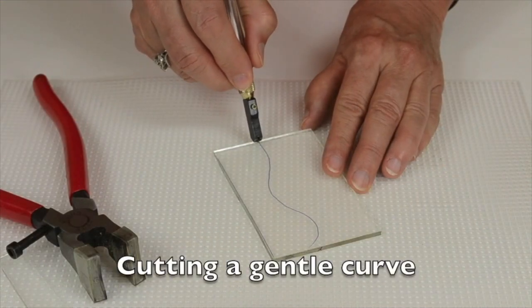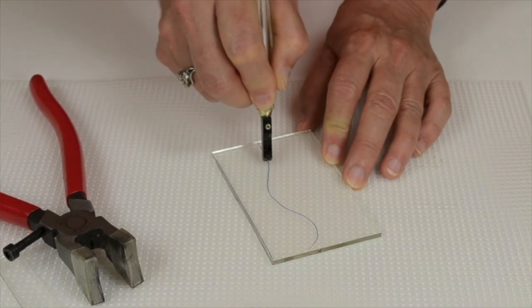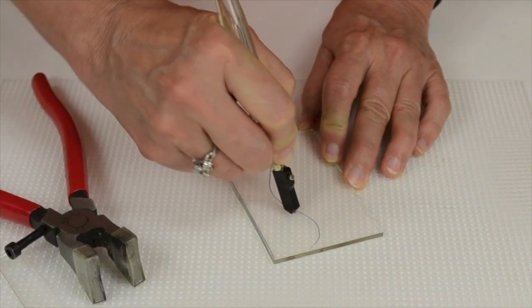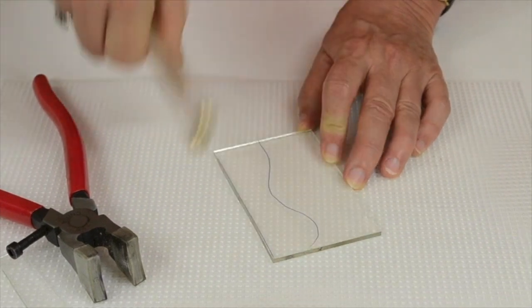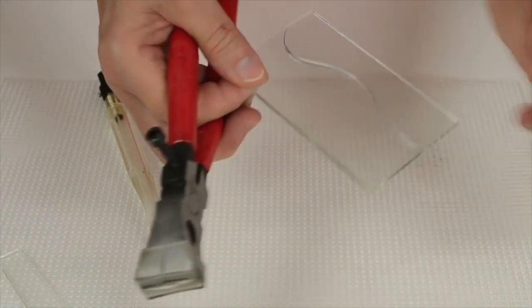You can also cut gentle curves with a glass cutter. I'm going to push my score away from me so I can see my line I've drawn better. Got my score, and to run it I'm going to start from one end. You can see that it ran partially, and I'm going to finish it from the other side.